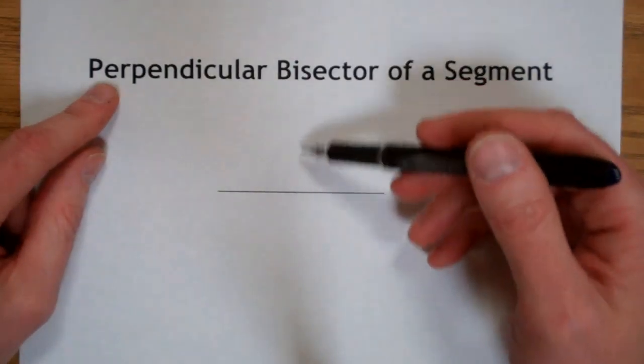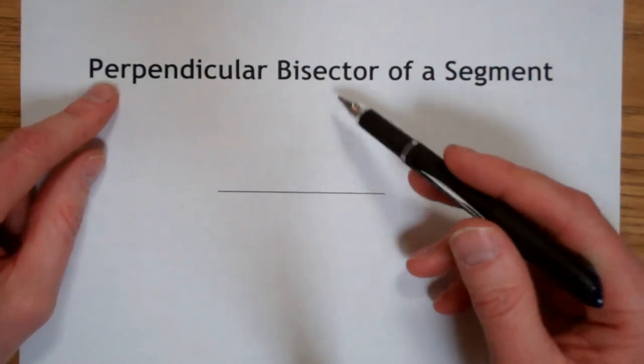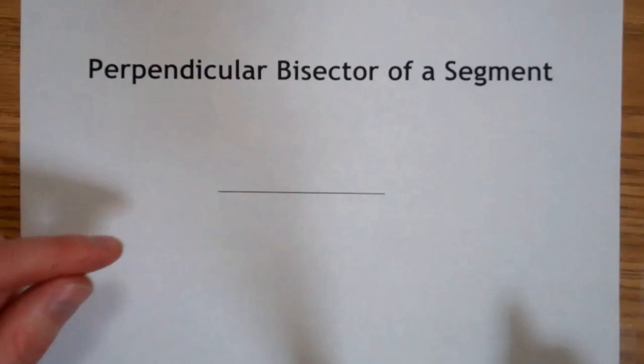Remember that perpendicular means it's going to cross at a 90 degree angle and bisect means that it's going to cut it into two congruent parts.